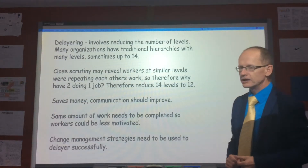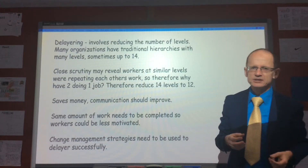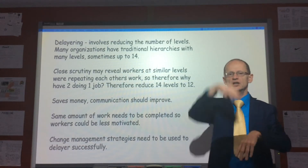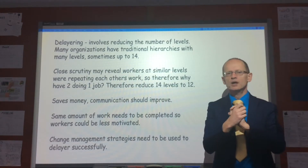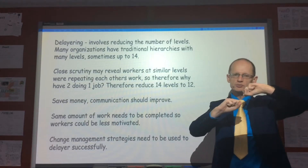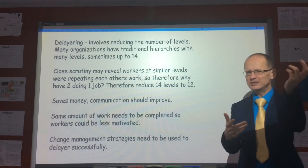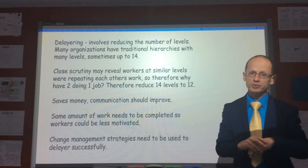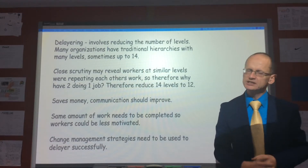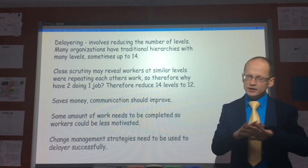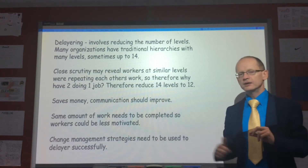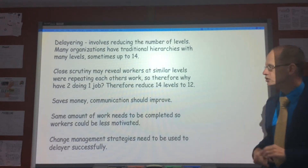Then we have de-layering. If you've got a tall organisation with 14 levels, sometimes people in the middle layers will be doing very similar jobs — that's a waste of money, and it takes lots of time for information to pass up and down. So sometimes organisations de-layer: they take out two of the layers, rewrite job descriptions, and that way they can save lots of money. The jobs which disappear have to go to other people, so training has to occur. A good change management process needs to be undertaken to assure the people who remain that their jobs are not under threat and that they will receive full training.